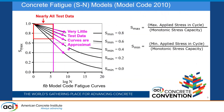For concrete, we show fatigue capacity in a different way. We have the number of cycles on the horizontal axis in log base-10, and on the vertical axis the maximum applied stress in the cycle divided by the monotonic stress capacity. For different minimum stress levels we have different curves. This curve comes from the model code developed by FIB.